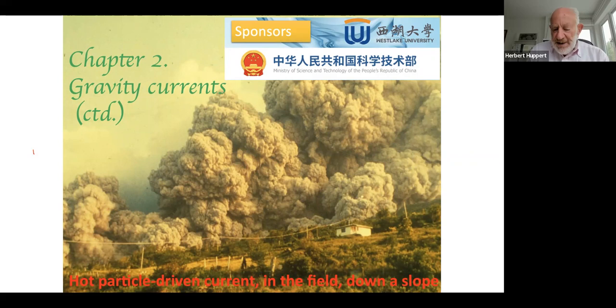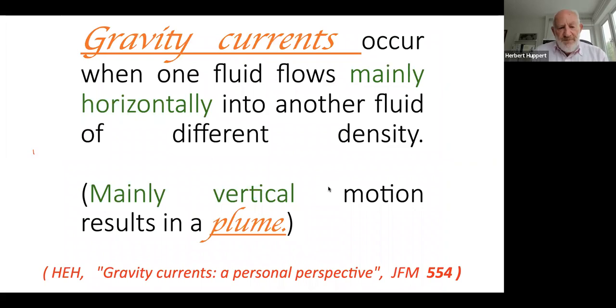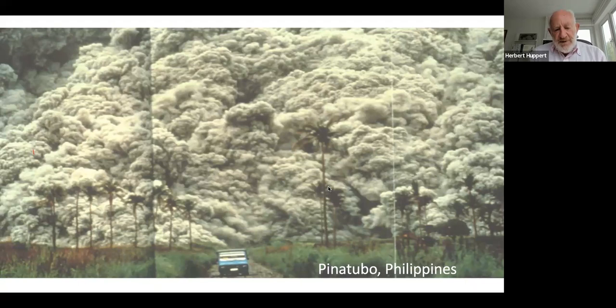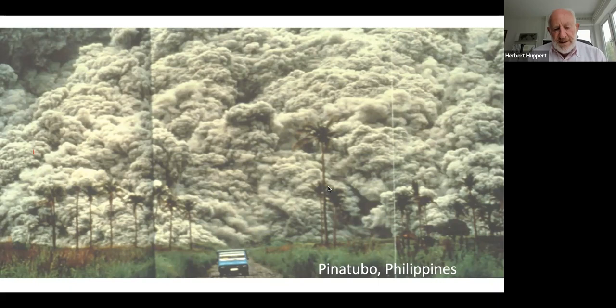Gravity currents occur when the flow is mainly horizontal, and this JFM article of mine will be useful. This is now a slide that I like — a gravity current over a horizontal ground, hot air, light air, but particle-laden, and that's what's driving it: that density difference is heavier than the air into which it's intruding.